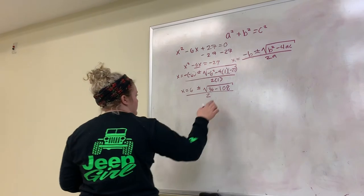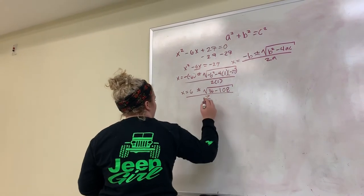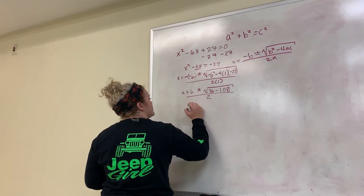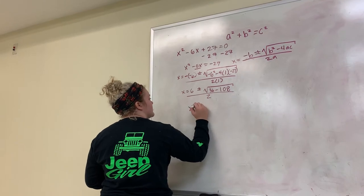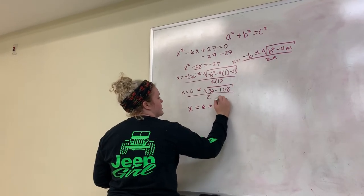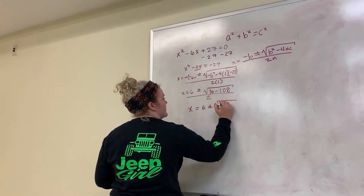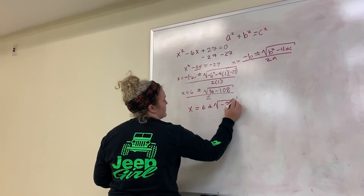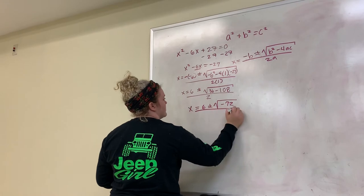Next step, we're going to be solving the subtraction on the square root. So this would be x equals 6 plus or minus square root of negative 72 over 2.